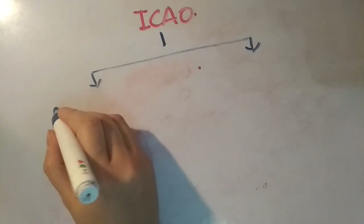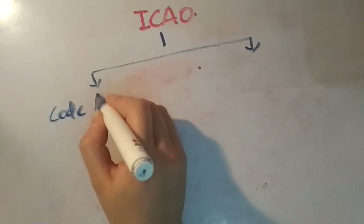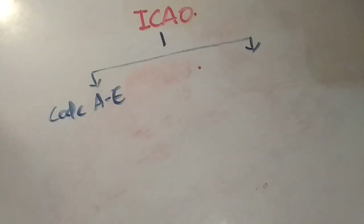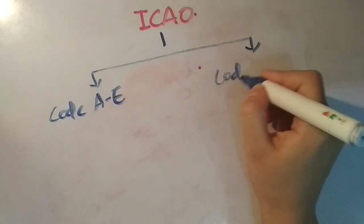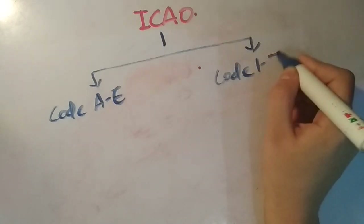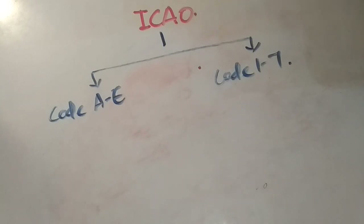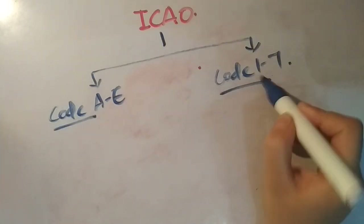The first classification uses letters — Type A to Type E airport. The second one uses numbers — Type 1 airport to Type 7 airport. So these are our two airport classification systems.